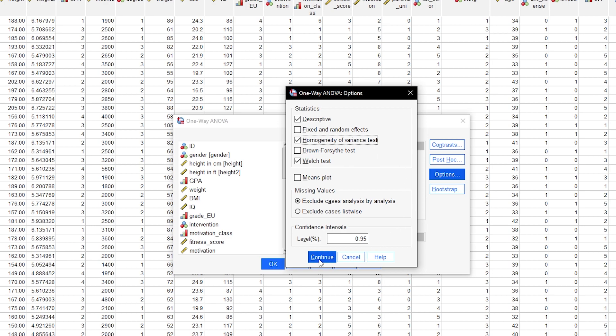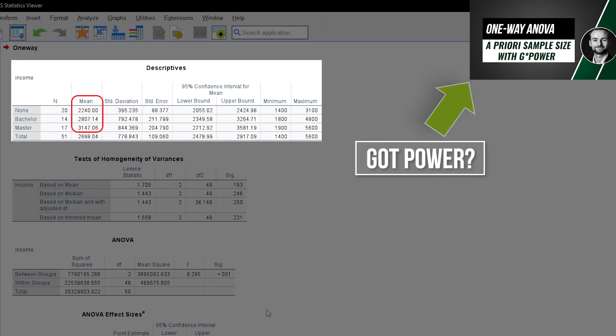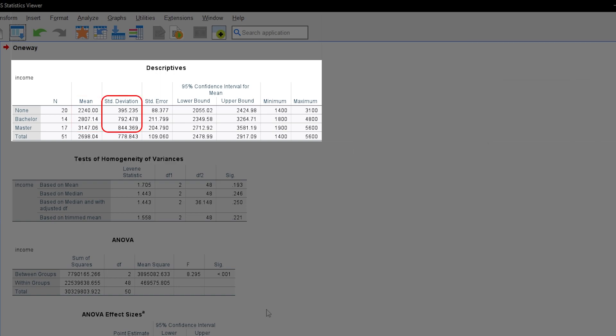When looking at the output, I first want to take a look at the mean and standard deviation of the income for my three groups. I can see that the mean is higher for a higher degree.